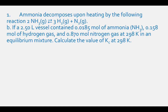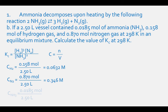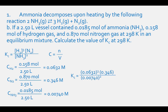To solve Part B, calculate the concentration of each species using moles divided by volume, then plug into the Kc expression: Kc = [H₂]³[N₂] / [NH₃]². [H₂] = 0.158 / 2.50 = 0.0632 M; [N₂] = 0.870 / 2.50 = 0.346 M; [NH₃] = 0.0185 / 2.50 = 0.00740 M. Therefore Kc = (0.0632)³ × 0.346 / (0.00740)² = 1.60.